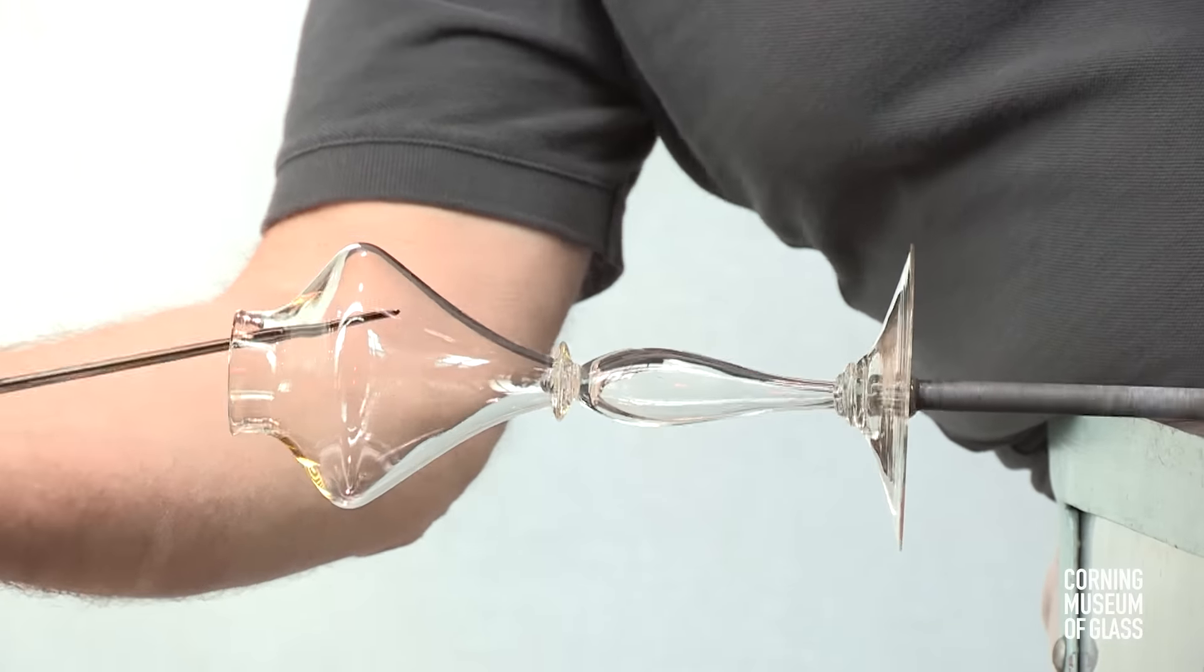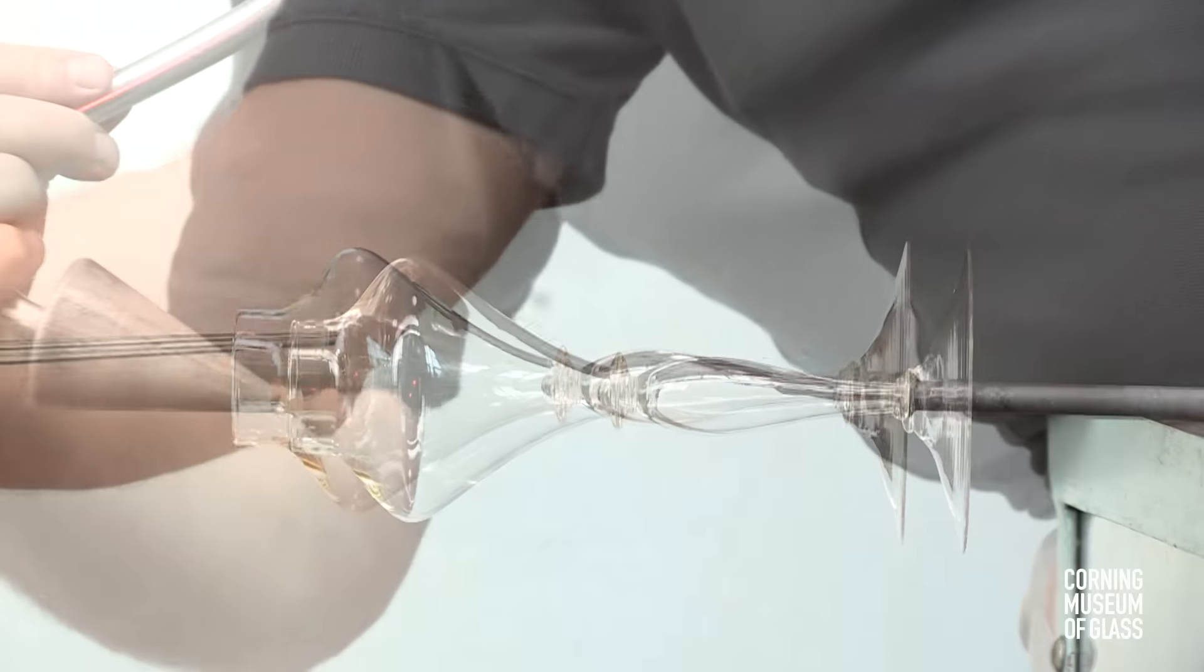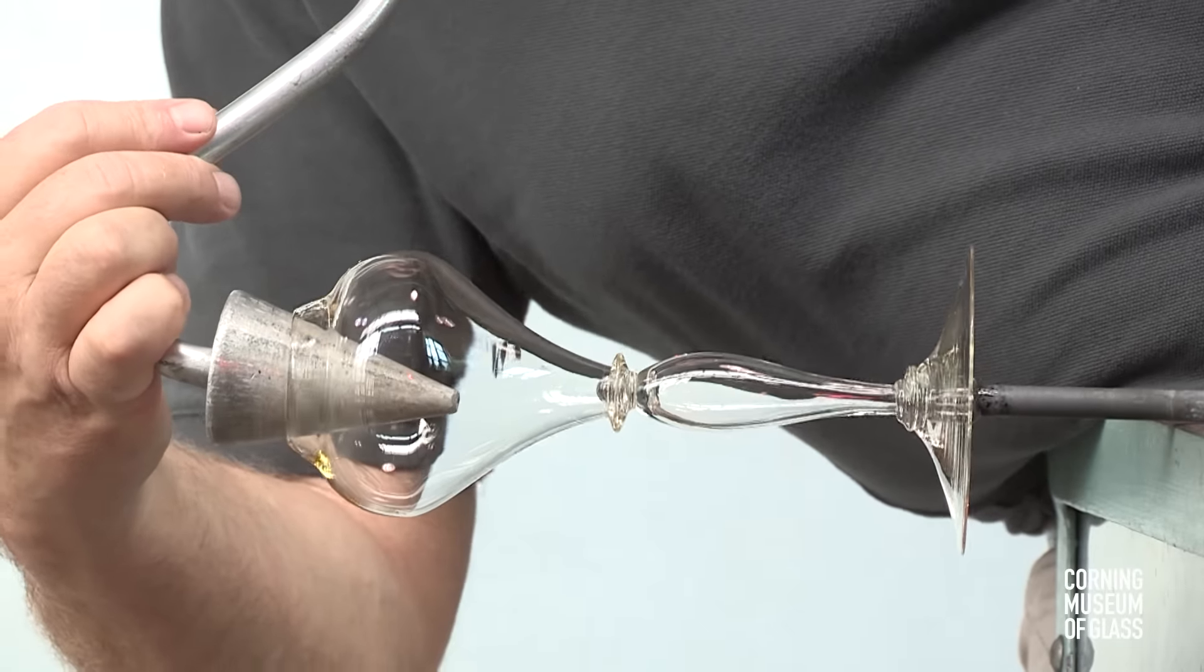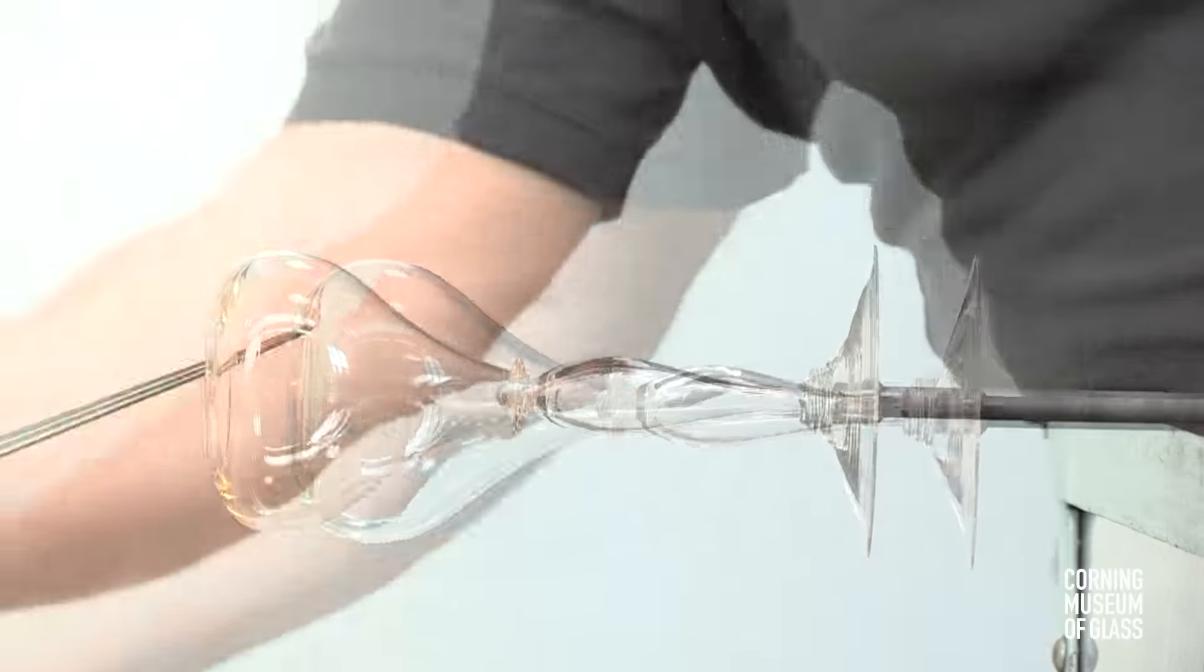The end is open to a diameter of about two inches, the glass reheated, and the soffietta used to inflate the upper shoulder.